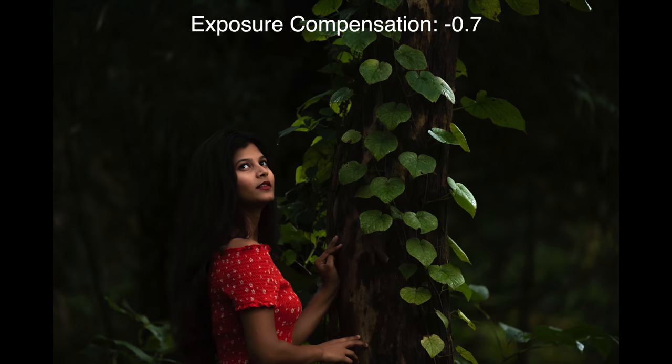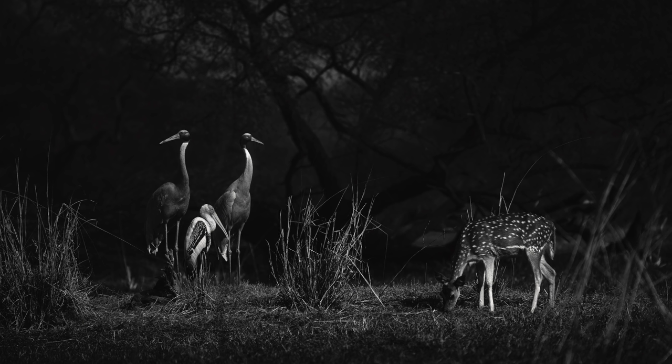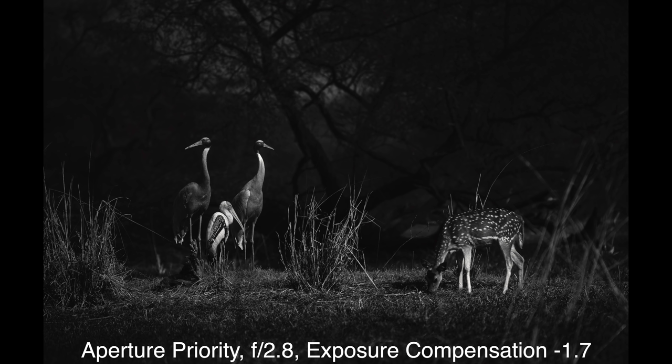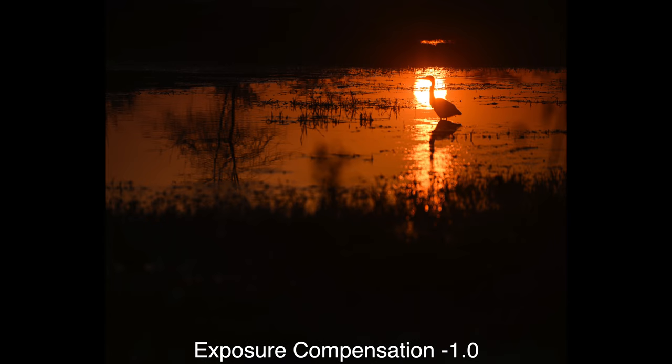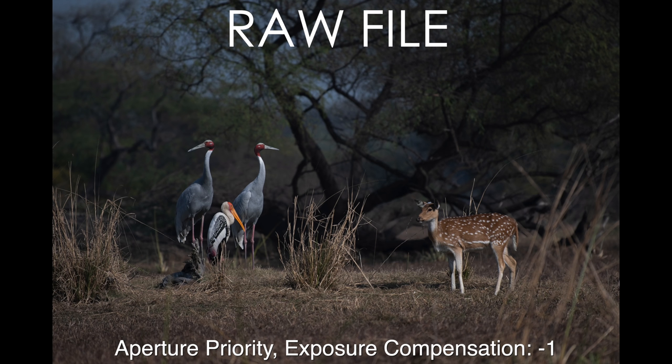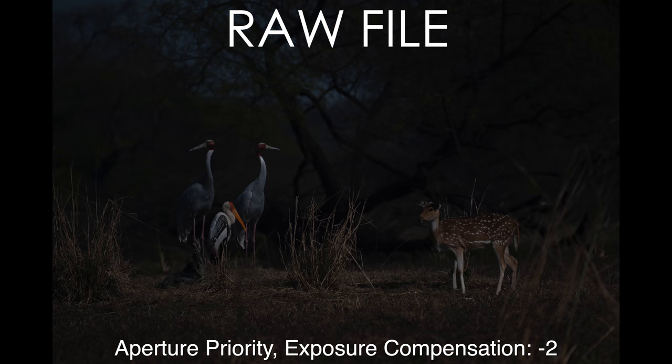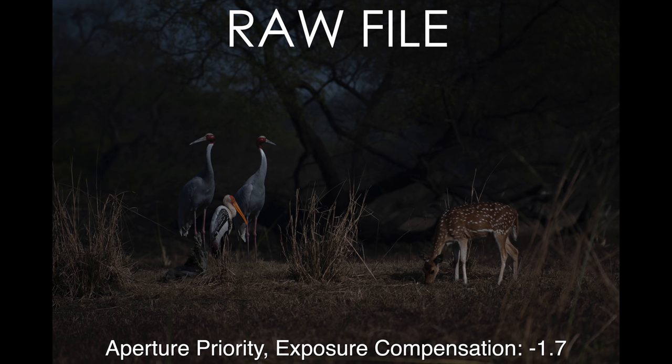I mostly use exposure compensation with aperture priority. If I feel the camera is shooting a very bright image, I'll dial something like minus 0.7, and if I feel I need it darker, I'll try minus 1 or minus 2. The image you're seeing right now was shot at aperture priority at f2.8 on my recent trip to Bharatpur, and I used an exposure compensation of minus 1.7. There's no single correct number for a perfect exposure — it's what you want. I tried minus 1, felt it was too bright; tried minus 2, felt it should be slightly brighter; so I settled on minus 1.7. It's a matter of trial and error, and as you practice you'll understand what values to use for different lighting situations.